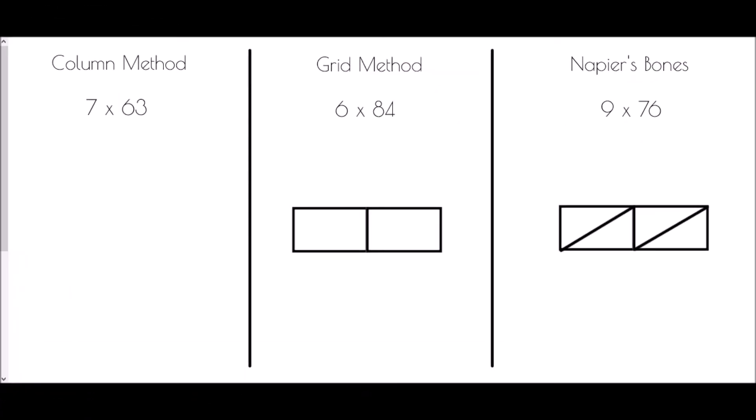In today's video I'm going to show you three different methods for doing multiplication: the column method, the grid method, and Napier's bones. I'm not going to say any one of these methods is better than the other. Whichever one you feel most comfortable with and whichever one you are getting the right answers with, that's the one you should be sticking with. But I just want to show you three different versions in case one stands out as a slightly easier method.